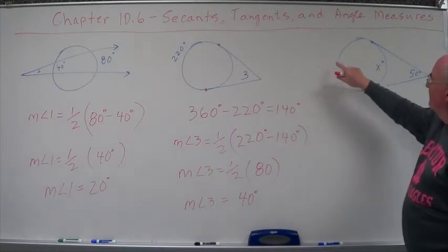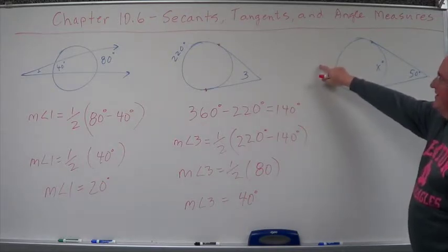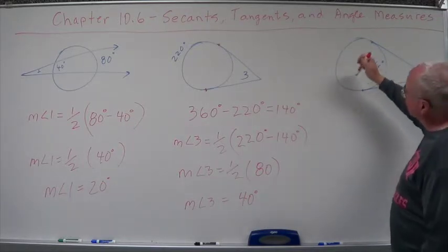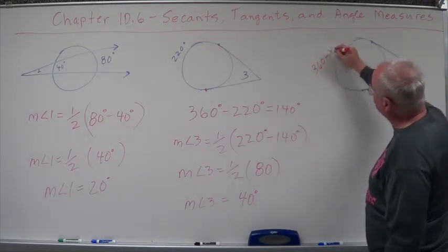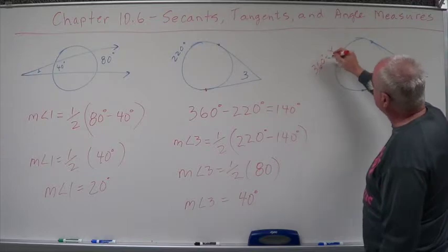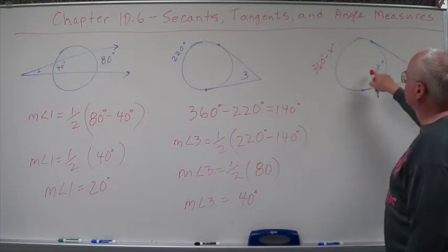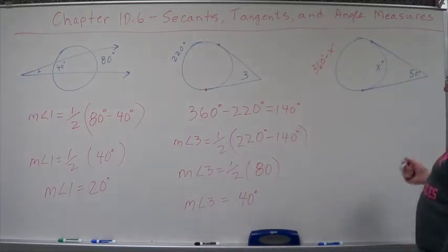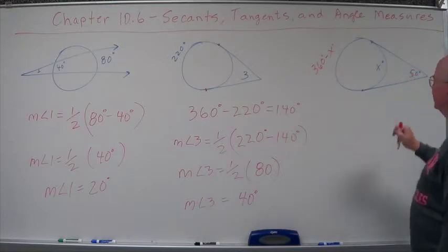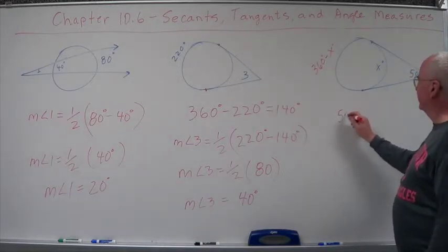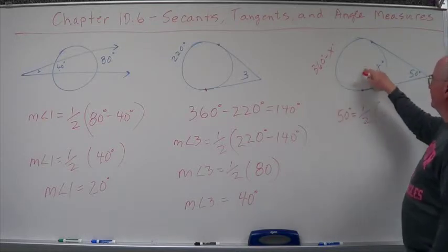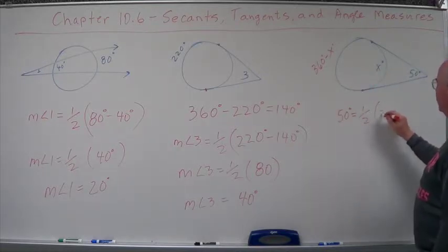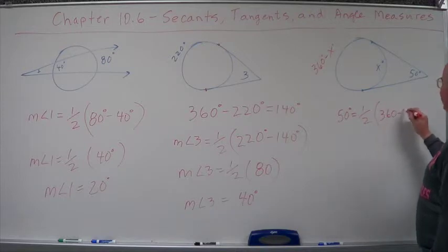We've got x. Well, what can we represent this piece out here? Well, this is x. This has to be represented by 360 minus x, right? 360 degrees minus x degrees equals this piece. Well, we know this is the angle, so the angle is 50 degrees equals one-half the difference of these two. So we've got 360 minus x minus x.